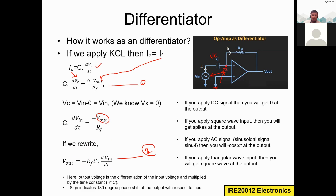The term −RfC is called the time constant. The output voltage is directly proportional to RC. If you increase the feedback resistor Rf value or the capacitor C value, the output voltage will also increase, since Vout is directly proportional to both.